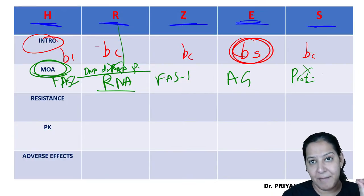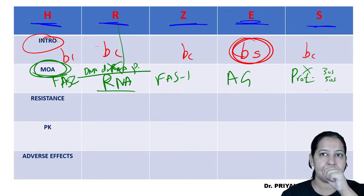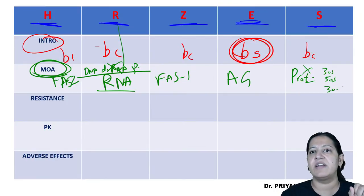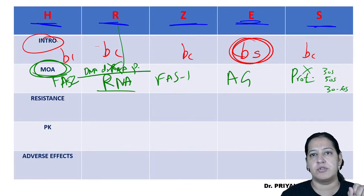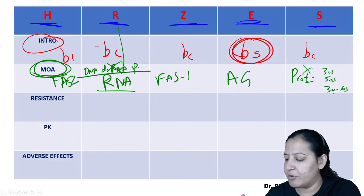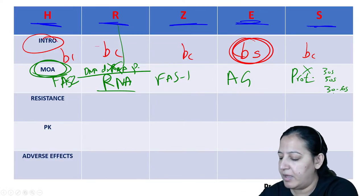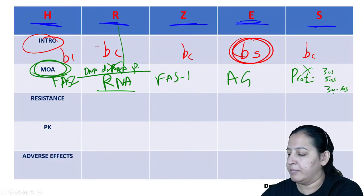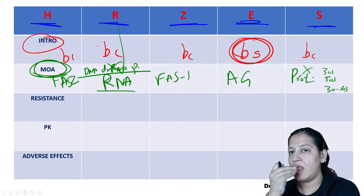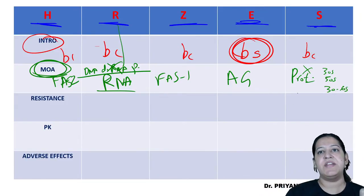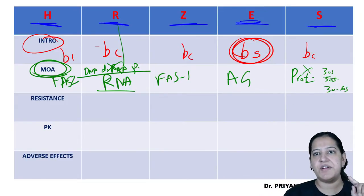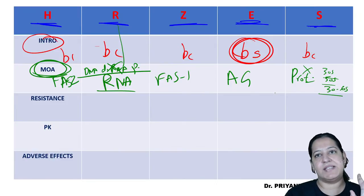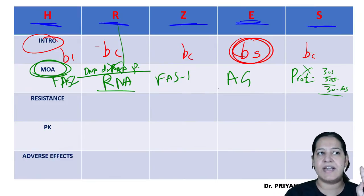So that is the mechanism of action of each of the five drugs. Three inhibit cell wall synthesis; rifamycin inhibits RNA synthesis; streptomycin inhibits protein synthesis.